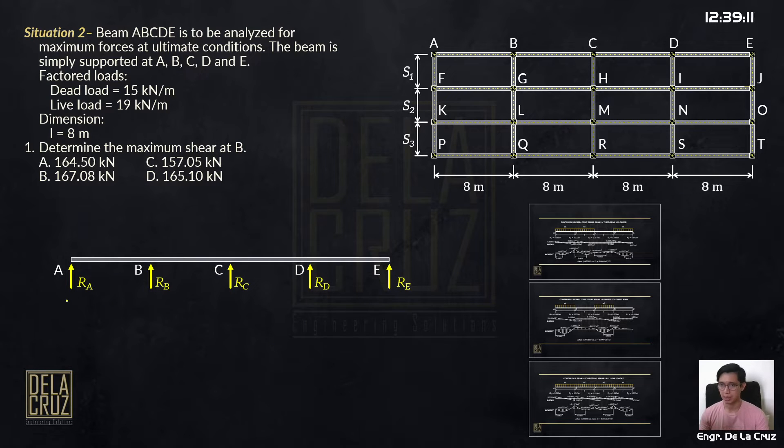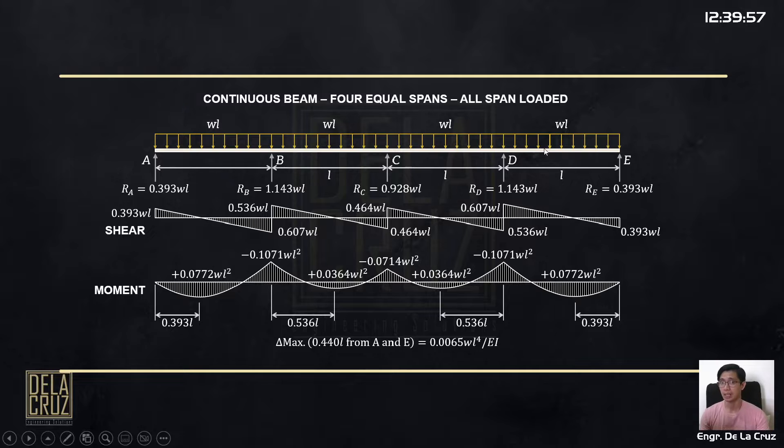Tingnan natin yung ating beam like this. RA, RB, RC, RD, and RE are the reactions at each support. Una, we have here the dead load, factored dead load. Yung dead load is always present all throughout the span. But we need to check anong load combination - ano yung ating orientation ng live load para magbigay ng maximum shear at point B. And that is by using these load patterns.